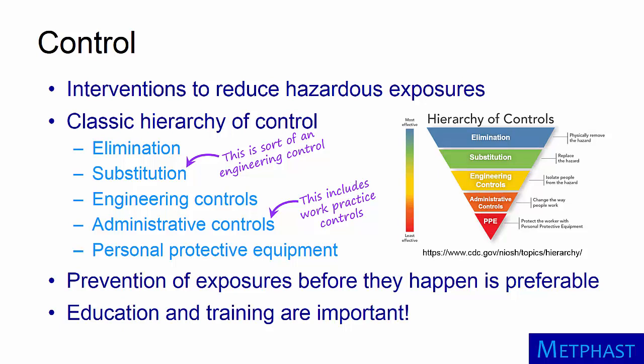Prevention of exposures before they happen is, of course, preferable, but that cannot always be the case. Elimination, for example, may not be possible because a particular chemical or process may be essential for the item being produced. As you move lower on the hierarchy, options often become more feasible economically and functionally, but they also become less effective. It is worth considering that education and training are important to help workers understand the hazards they face and to motivate them to perform their tasks in ways that limit their exposures to hazardous agents.